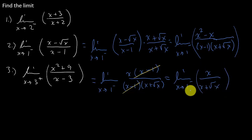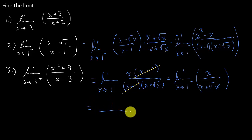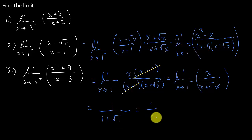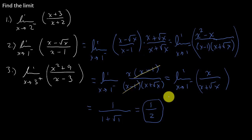Now let's try plugging the 1 in. That's going to give me 1 over 1 plus the square root of 1, which is 1 over 1 plus 1, which is 1 over 2. So that limit is 1 half.